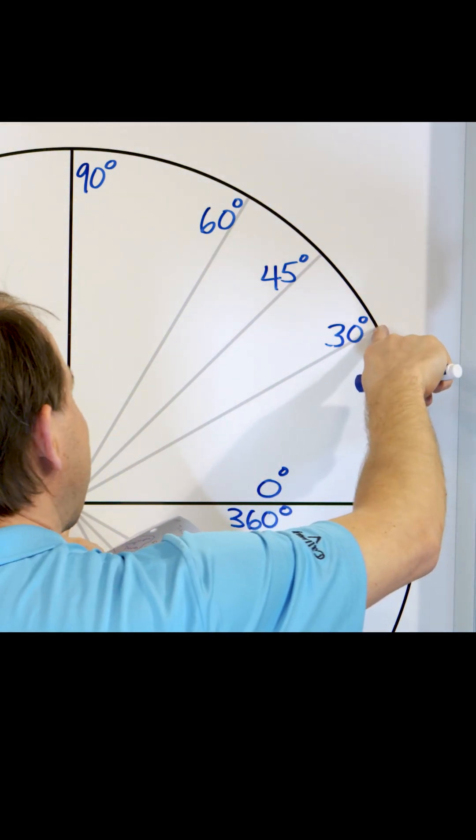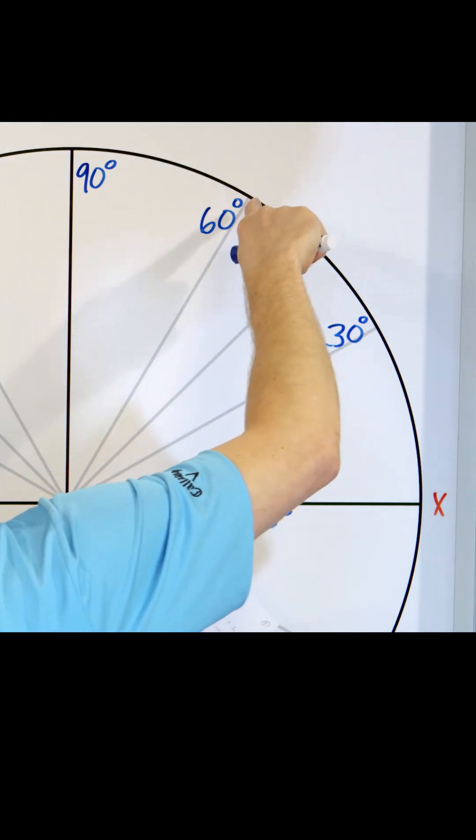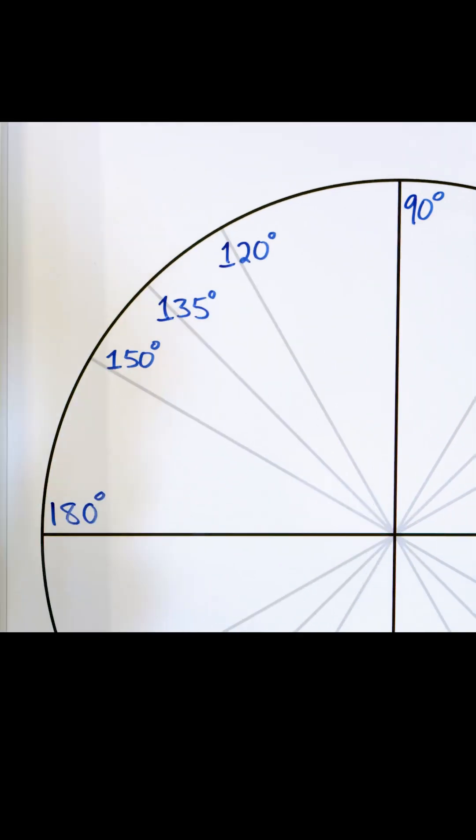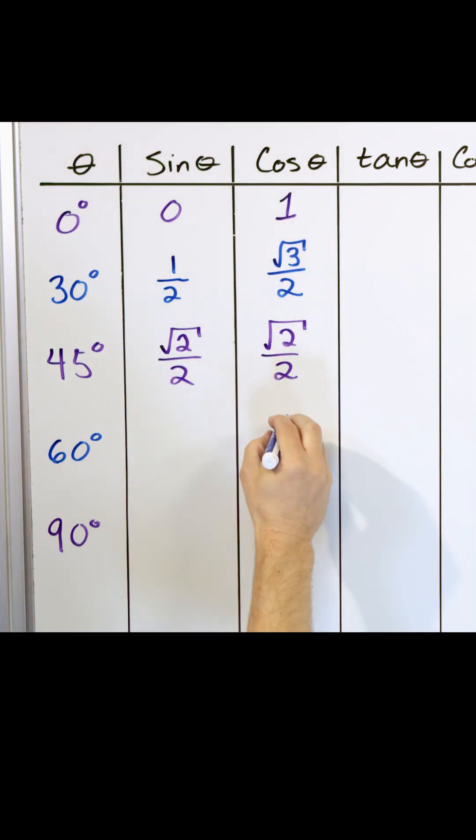Remember, for the sine, it was the sine of 30 that was one half. But here, the cosine of 60 is actually one half. The cosine of 60 is one half.